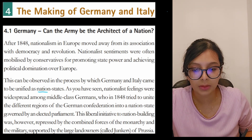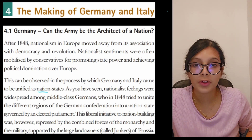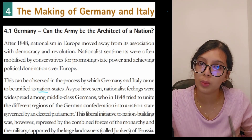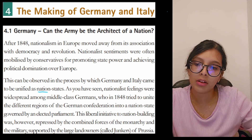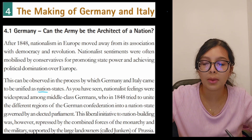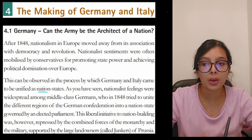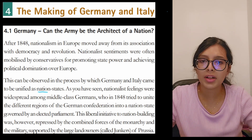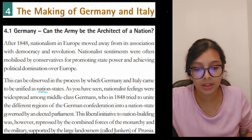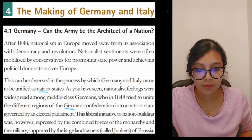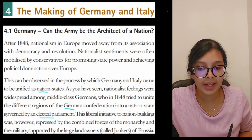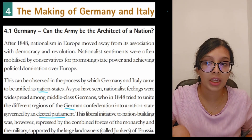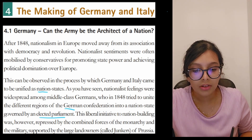Nationalist feelings were widespread among middle-class Germans. The first people who got influenced were the middle class — people educated to a minimal level. The poor and ultra-rich were not interested in these changes. The rich felt superior and didn't care about equality, while the poor weren't educated enough to know they required the same freedoms. So the middle class were the ones who knew these things and moved forward, trying in 1848 to unite different regions of the German Confederation into a nation state governed by an elected parliament.